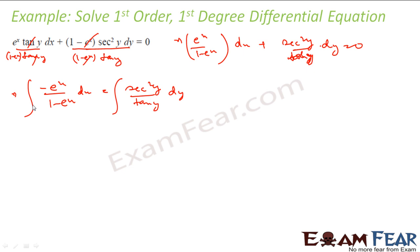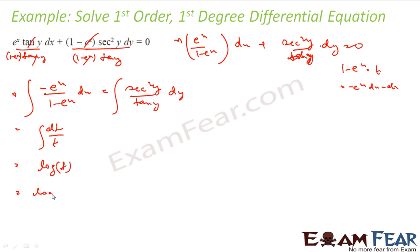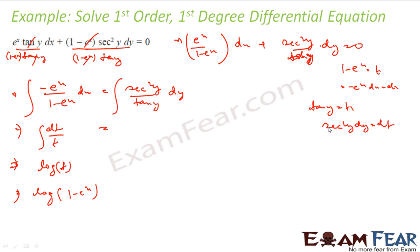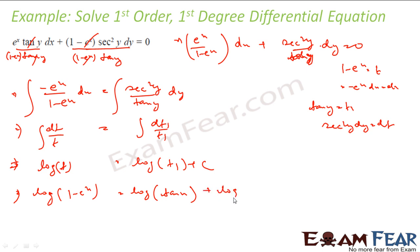For the left side, take (1 − eˣ) equal to t, so minus eˣ dx equals dt. This becomes dt/t, whose integral is log t, giving log(1 − eˣ). For the right side, take tan(y) equal to t₁, so sec²(y) dy equals dt₁. This becomes dt₁/t₁, whose integral is log(t₁) plus constant, giving log(tan y) plus log c.